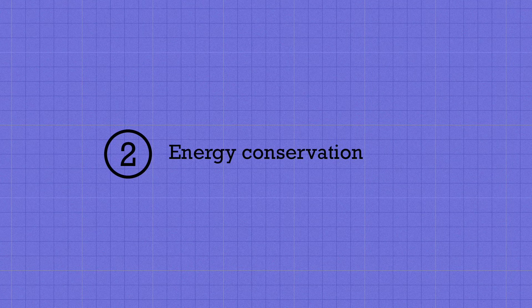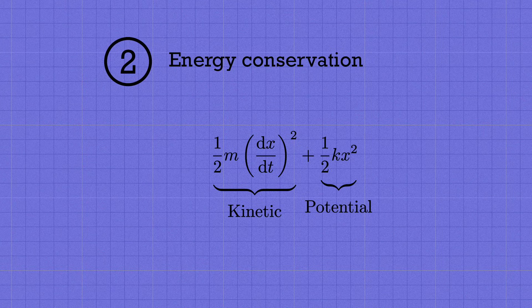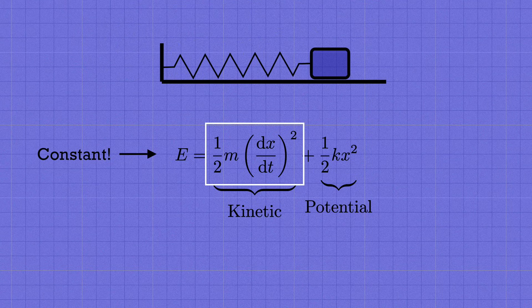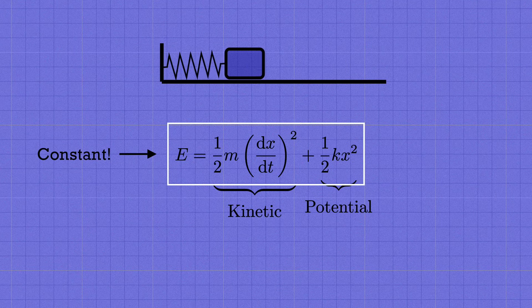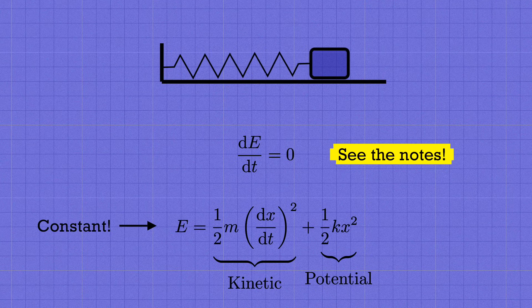That brings us to method number two: using energy conservation to solve the equation. If we take the kinetic energy of the block, one half m times the velocity squared, and add to it the potential energy in the spring, one half k x squared, we'll get a constant — the total energy. Both x and dx by dt are changing with time, but when we add them together in this special combination, the t's drop out and we get a constant. The way to check that is to take the derivative of E with respect to t and see that it's equal to zero.